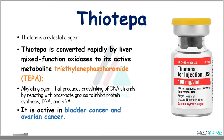Then we have thiotepa. Thiotepa is a cytostatic agent that is converted rapidly by liver mixed functional oxidases to its active metabolite known as triethylene phosphoramide, also known as TEPA. Thiotepa produces cross-links of DNA strands by reacting with phosphate groups to inhibit protein synthesis, and DNA and RNA functions. It is active in the treatment of bladder cancers and ovarian cancers.